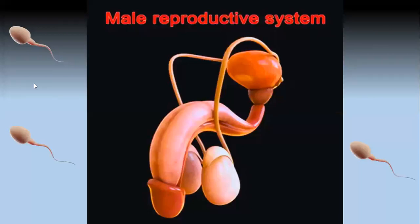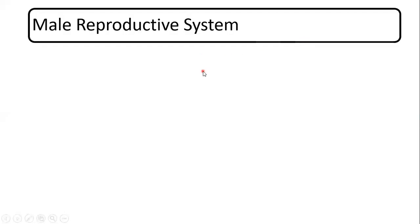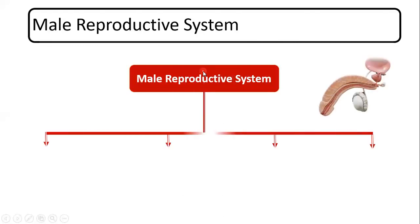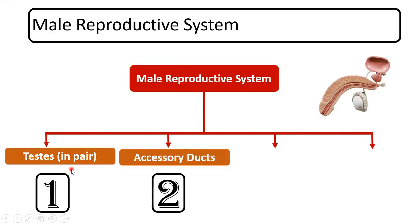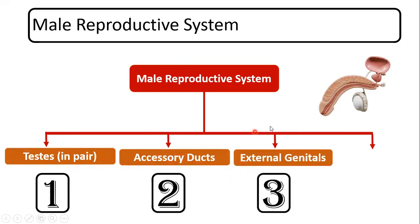Hello friends, welcome back to my YouTube channel Medical Simple by Hardiksha. Today we'll have a discussion on the male reproductive system. It majorly comprises four different organs: first testis, second accessory ducts, third external genitals, and fourth glands.